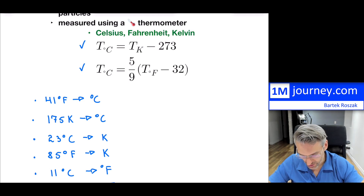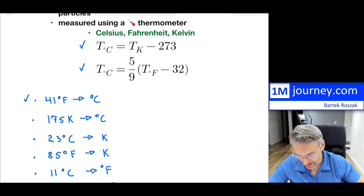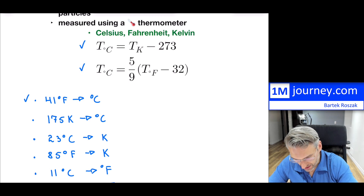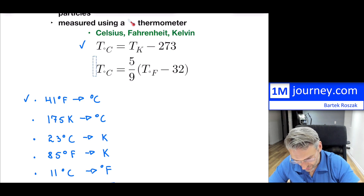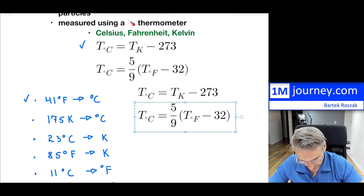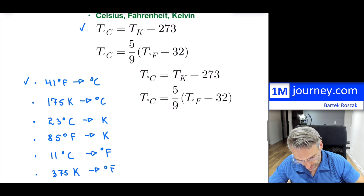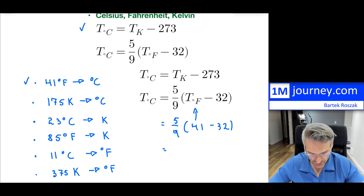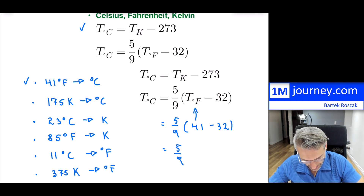Let's begin with the first example: 41 degrees Fahrenheit, and we want to convert this to degrees Celsius. We pick the correct formula — the one between Celsius and Fahrenheit. Substituting in, it's going to be 5 over 9 times (41 minus 32). Now 41 minus 32 is 9, so it's 5 over 9 times 9. The 9s cancel, and this is going to be just 5 degrees Celsius.